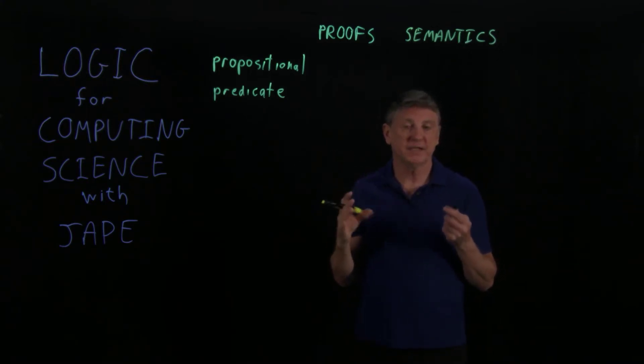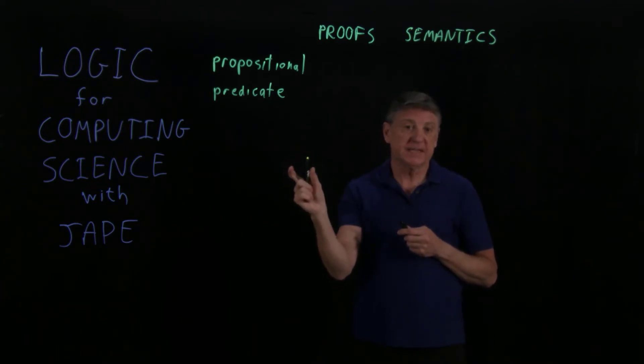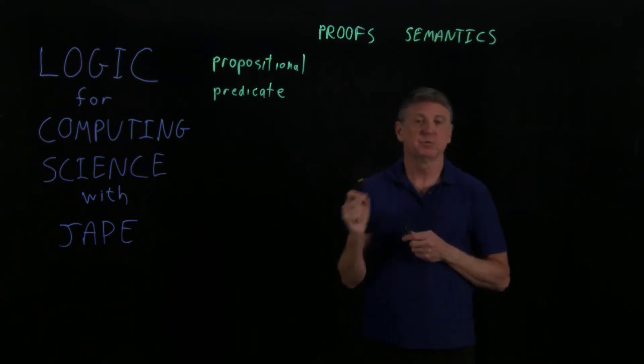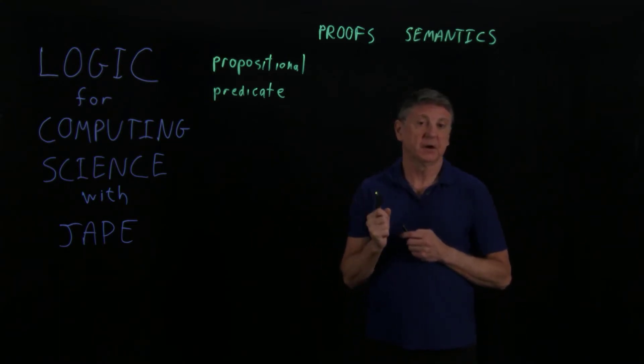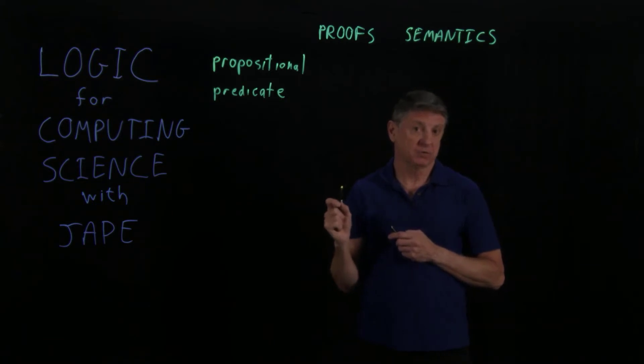And we combine them in ways by saying, for example, this thing and this other thing are both true. At least one of this thing and this other thing are true. This thing is not true.